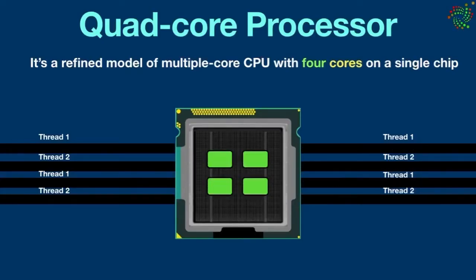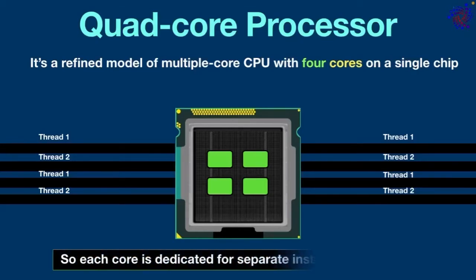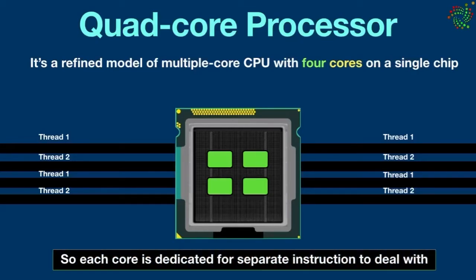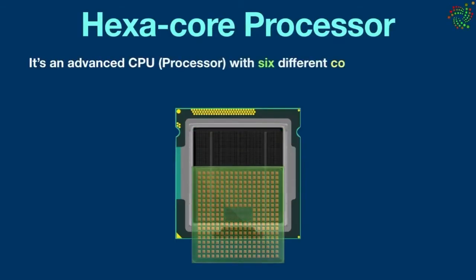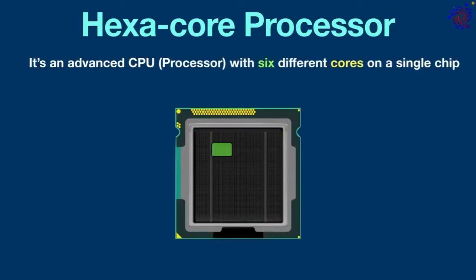A quad core CPU can execute multiple instructions at the same time, with each core dedicated to a separate instruction. Quad core is best suited for gamers and heavy applications. Hexa core CPU — it's an advanced CPU with six different cores on a single chip.